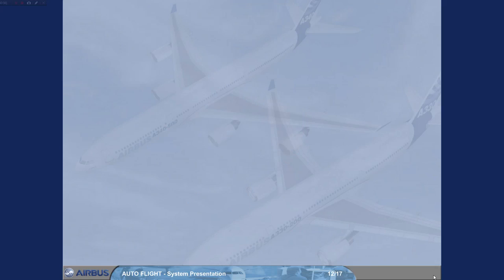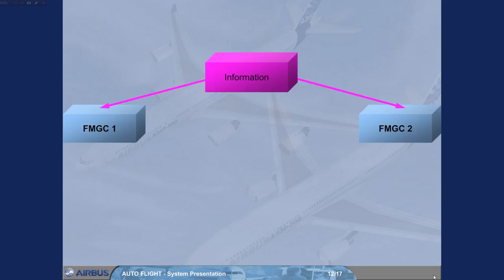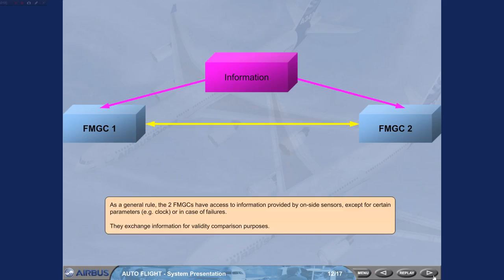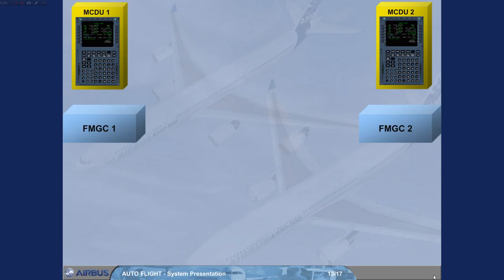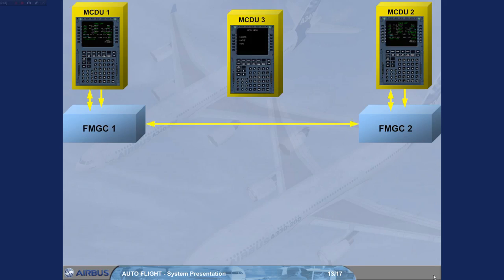As a general rule, the two FMGCs have access to information provided by on-side sensors, except for certain parameters — for example, the clock — or in case of failures. They exchange information for validity comparison purposes. For example, information from MCDU-1 is received by FMGC-1 and transmitted to FMGC-2. All FMGCs and MCDUs are then synchronized. The third MCDU is provided as a backup in case of failure of MCDU-1 or 2, and then replaces MCDU-1 or 2.